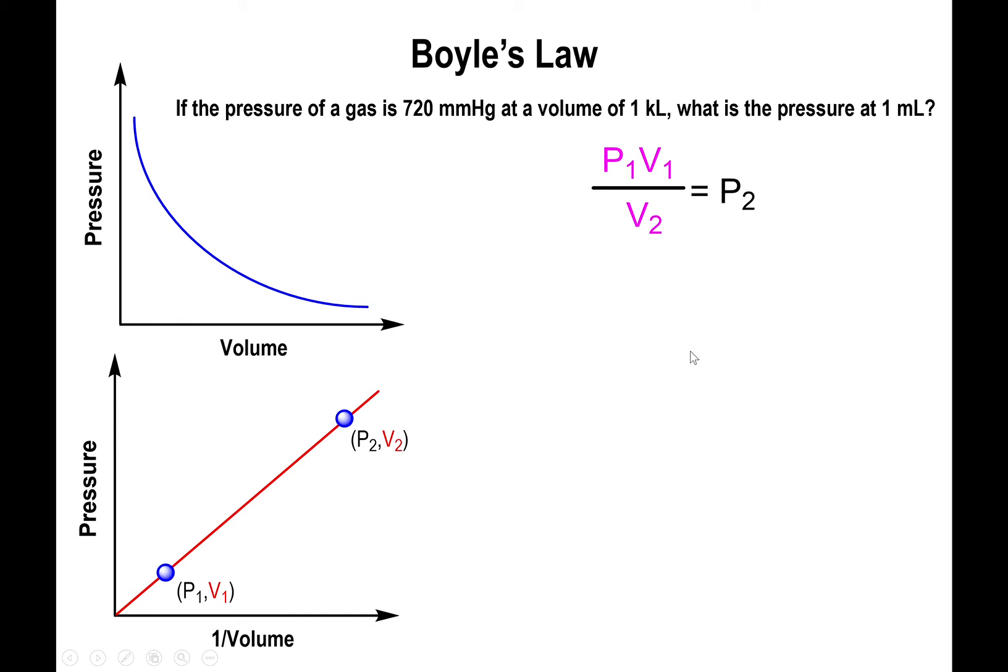Now you input the data. You have 720 millimeters mercury for the pressure, so you input that for P1. V1 is the corresponding volume, which is one kiloliter. The second volume is in milliliters.